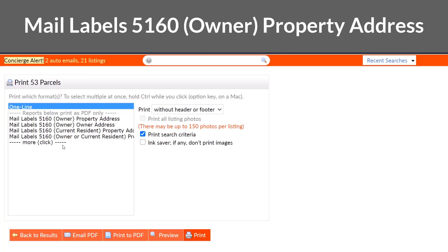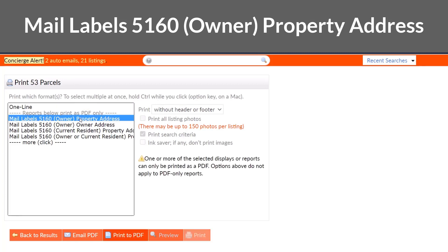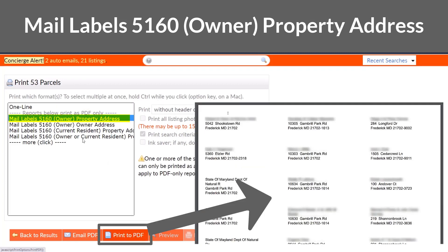If you're marketing to a property owner who lives at the address, you'll choose Mailing Label 5160 Owner Property Address.